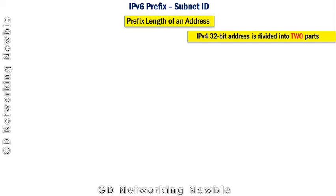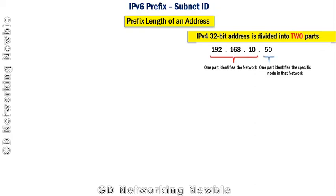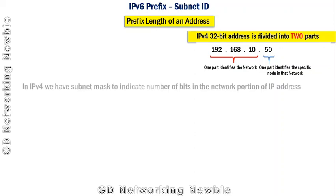In IPv4, if you remember, there is a 32-bit address and that address has two parts. One part represents the network and the second part represents the specific nodes or computers in that network. In IPv4 we have a subnet mask to indicate how many bits are used in the network portion and how many bits are used in the host portion of the IP address.